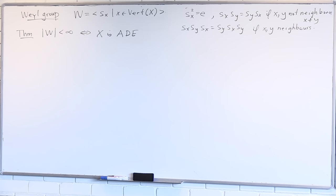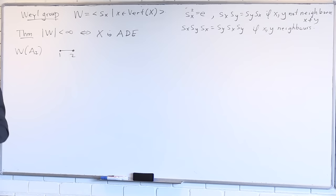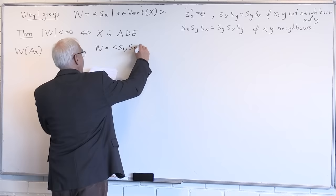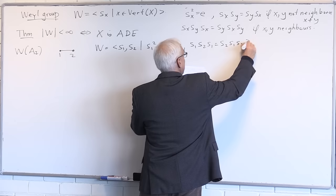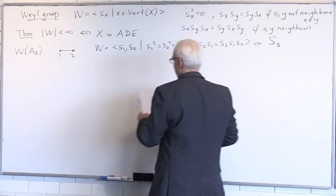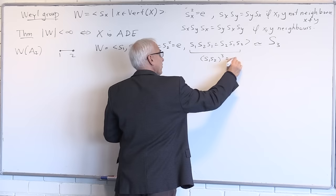Let's look at A2 — two nodes connected. W is generated by two elements, S1 and S2, with S1² = S2² = identity and a single braid relation S1 S2 S1 = S2 S1 S2. That's well known to be the symmetric group on three things, S3. Given the other relations, the braid relation is equivalent to (S1 S2)³ = identity.